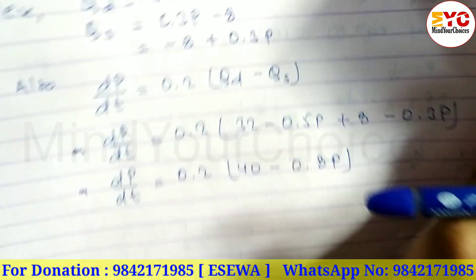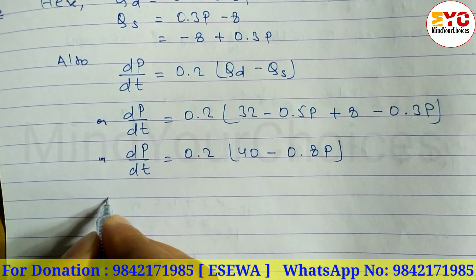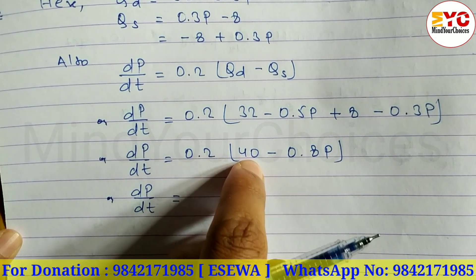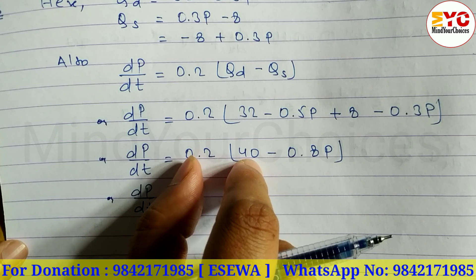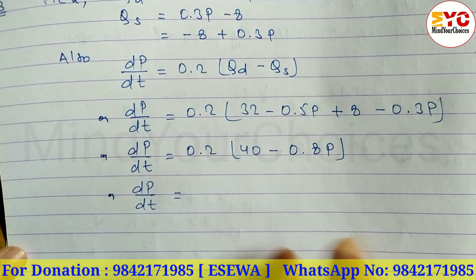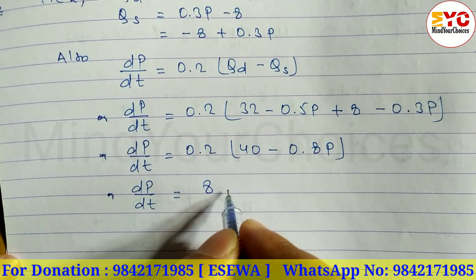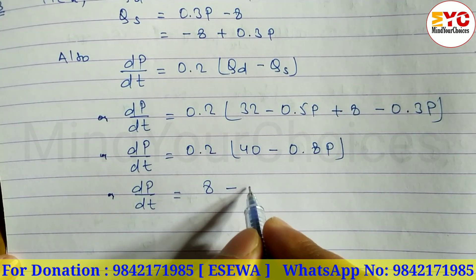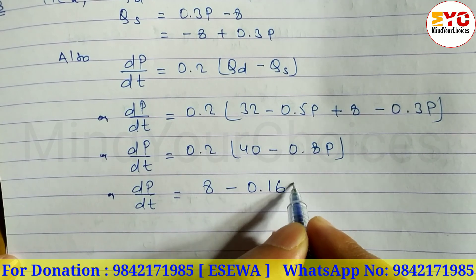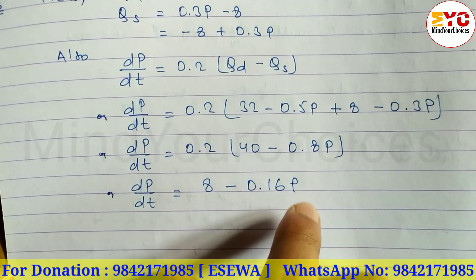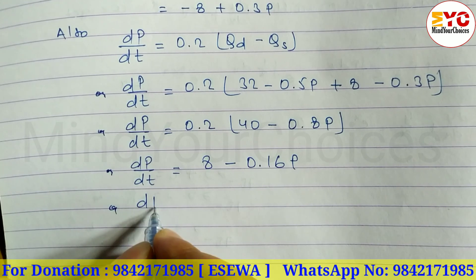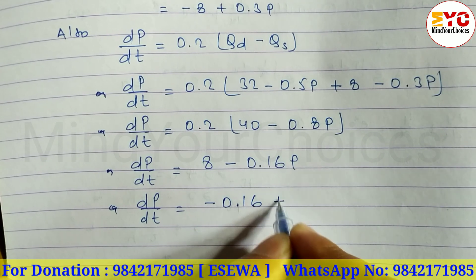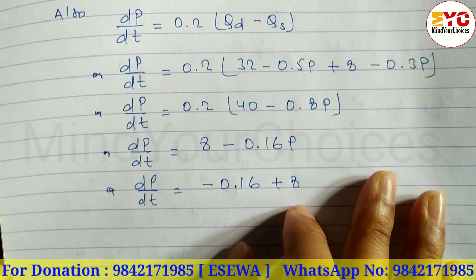Multiplying through by 0.2: 0.2 times 40 equals 8, and 0.2 times 0.8p equals 0.16p. Therefore dp/dt equals 8 minus 0.16p, which we can write as dp/dt equals negative 0.16p plus 8.